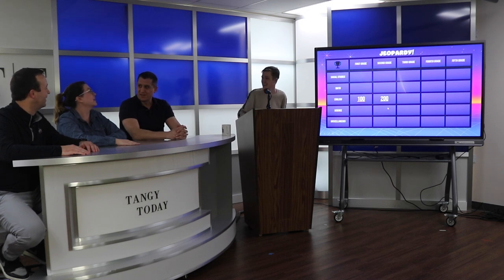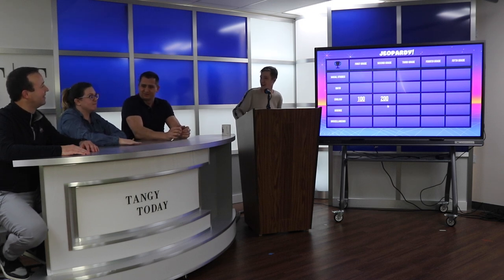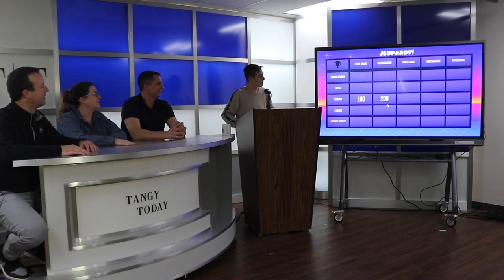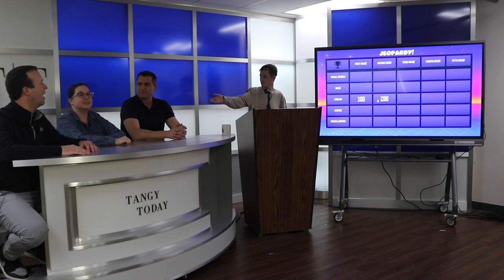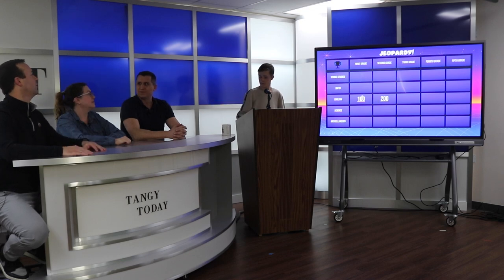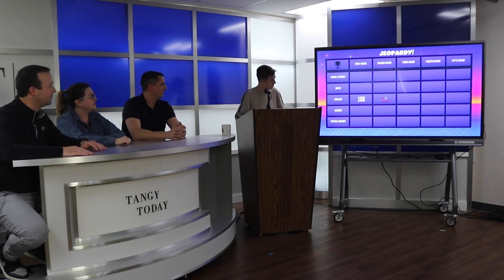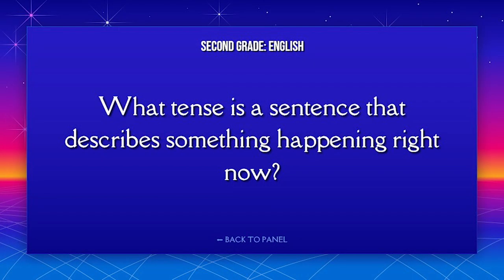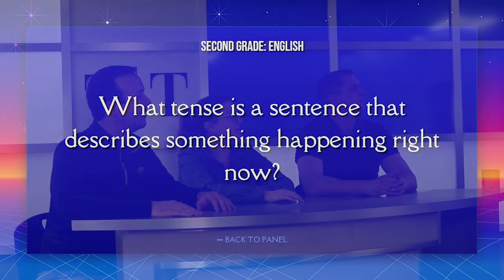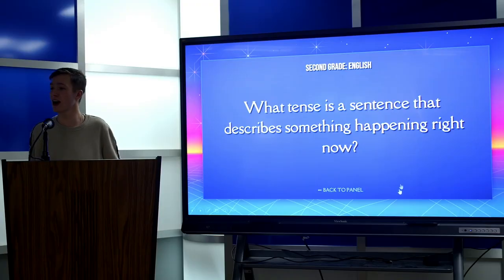We have two more in English — 100 or 200? Let's go 200 English. What tense is a sentence that describes something happening right now? Present. That is correct.